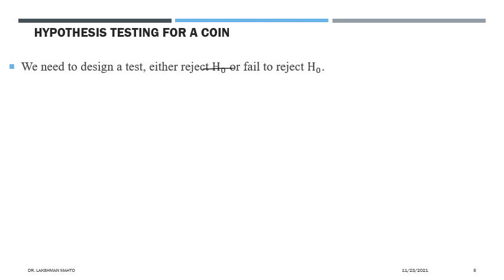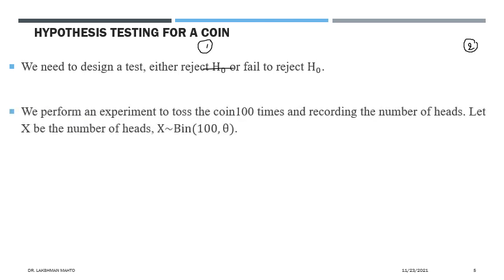Either we reject H0 to accept H1 — meaning it is statistically significant to accept H1 based on observation — or we fail to reject H0. To design a test, we perform an experiment: toss the coin 100 times and record the number of heads. This is a very feasible experiment. We introduce a random variable X counting the number of heads. X is a binomial random variable with parameter theta and number of trials n equals 100.